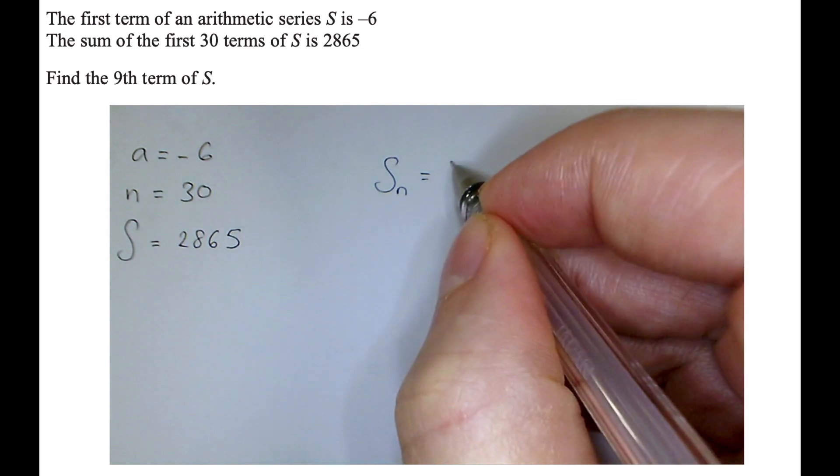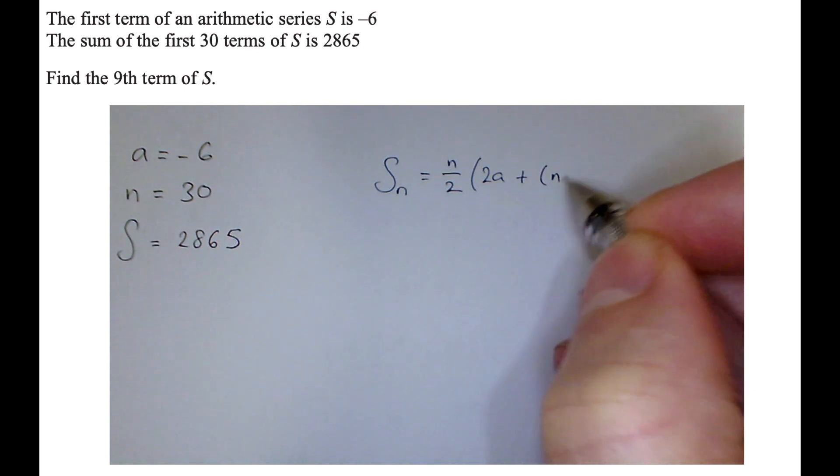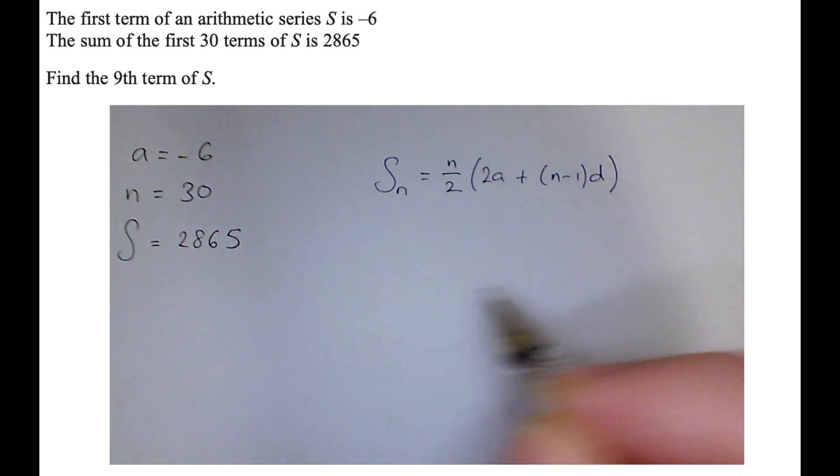So if I write down the formula, I can substitute in what I've been told. So what I'm writing down is that the sum of the first 30 terms, so N is equal to 30.